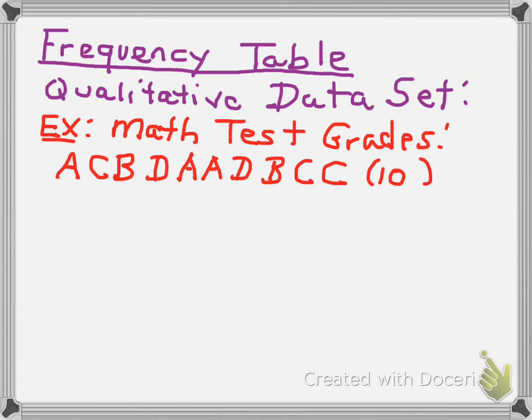The first way to display your data that we are going to talk about is called a frequency table. And we are going to do an example of qualitative data, of a qualitative data set. The following grades represent math test grades. So you can see them all listed there. I chose to only include 10 because of just the logistics of doing the frequency table. This is qualitative data because the test grades are represented by a letter as opposed to an actual value.